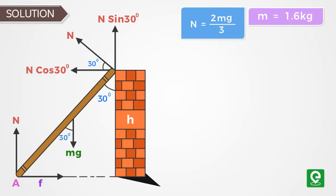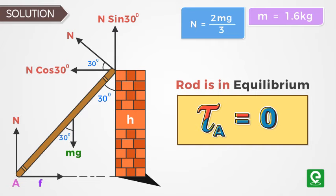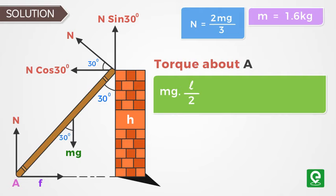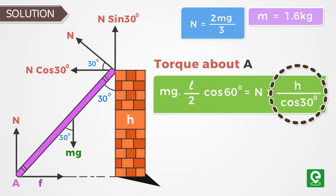Writing torque about A, we get mg into l by 2 cos 60 degrees equals normal force into h by cos 30 degrees. H by cos 30 is the distance from A to the normal force on the stick.